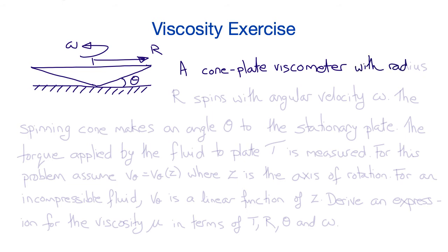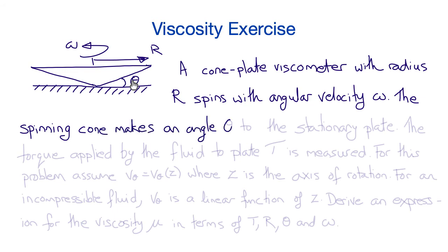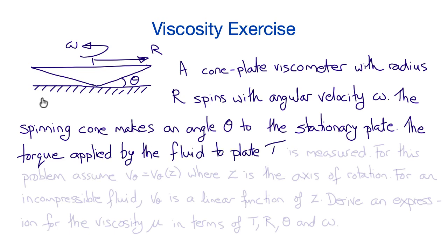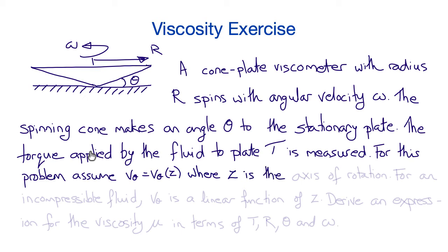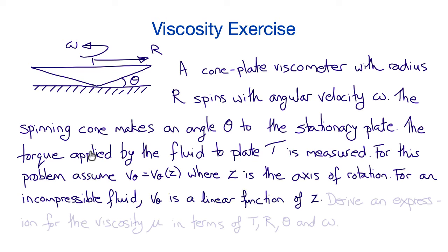In this exercise, consider a cone and plate viscometer with outer radius R that is spinning with angular velocity omega. The spinning cone makes an angle theta to the stationary plate. The torque T applied to the plate by the fluid is measured by the device. You can assume that the circumferential component of the velocity, v_theta, is only a function of z — the axis of rotation — and for an incompressible fluid, v_theta is a linear function of z. Derive an expression for the viscosity mu in terms of the torque T, radius R, angle theta, and angular velocity omega.